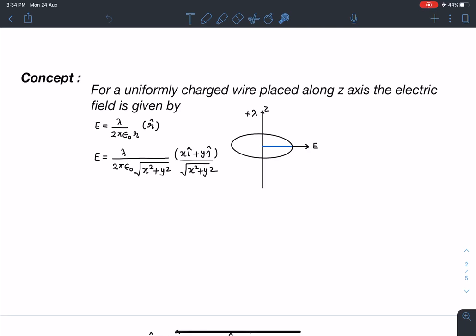So concept here is for a uniformly charged wire placed along z axis the electric field is given by: if you remember field due to an infinite wire placed along z axis we can write it as lambda by 2 pi epsilon 0 r where lambda is the linear charge density and r is the distance of that point from the wire and its direction will be radially away from the wire. So I can denote it by r cap. r cap is a unit vector in polar coordinates.